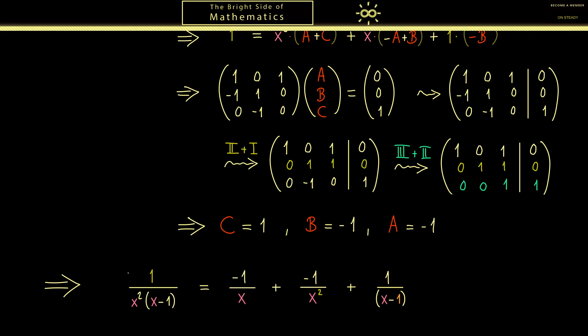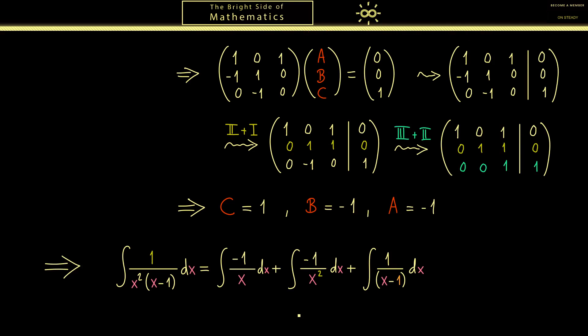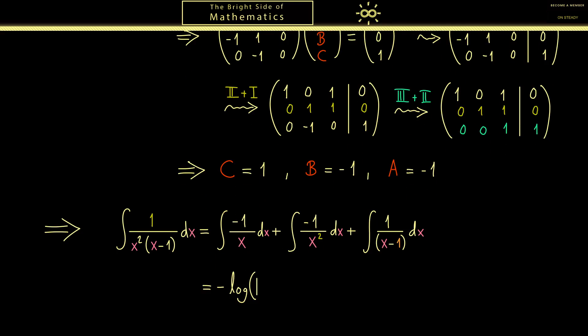However please don't forget that we want to integrate this function. In other words now we have to solve three integrals here. And as before two of them are the logarithm. So the first one is minus the logarithm of the absolute value of x. And indeed also the third one is the logarithm but now with x minus 1 in the absolute value inside.